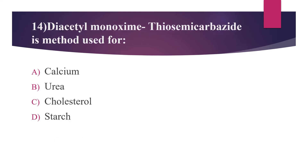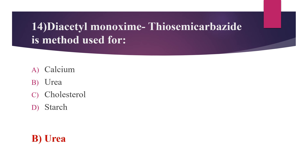Fourteenth question: diacetyl monoxime diosemicarbazone method is used for which analyte? Option A: calcium. Option B: urea. Option C: cholesterol. Option D: glucose. The answer is option B, urea. Other methods for determination of urea include the Berthelot method and the phenylhypobromite method.